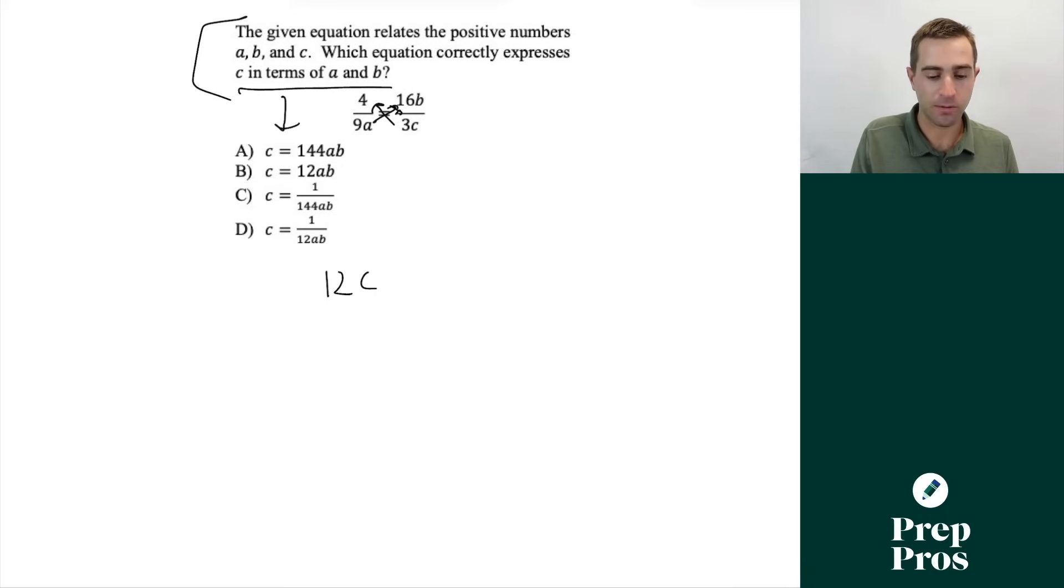As we do that, 4 times 3c is going to give us 12c. When we cross multiply our 9a and our 16b, that's going to give us 144ab. Now if we just want to solve for c, we just need to divide both sides by 12, and that will give us our correct answer of b.